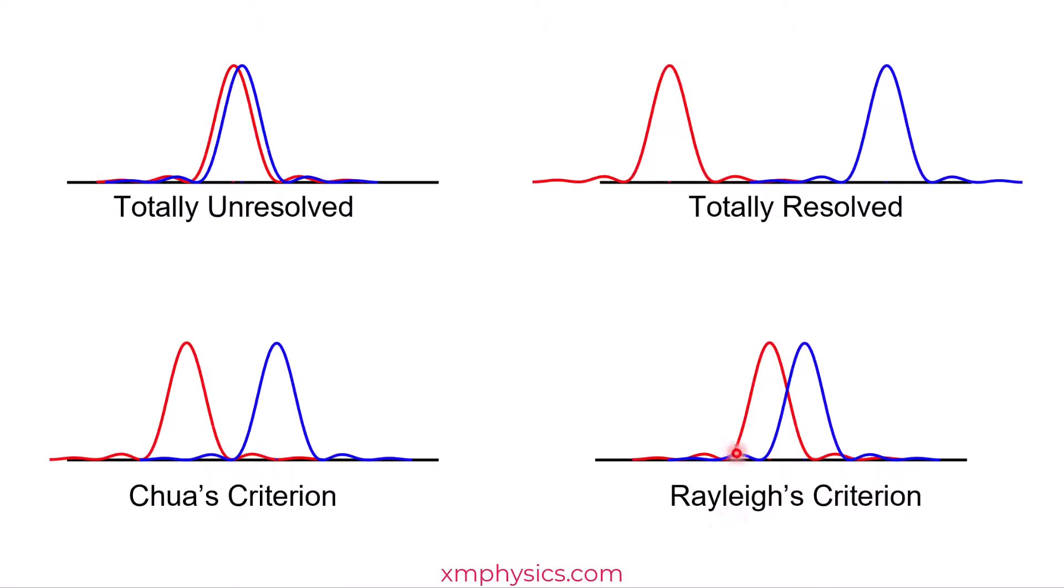So the central maximums have already overlapped. But according to Rayleigh, this amount of overlap is still okay. As long as one guy's first minimum coincides with the other guy's peak, there's enough separation between them to be resolved.